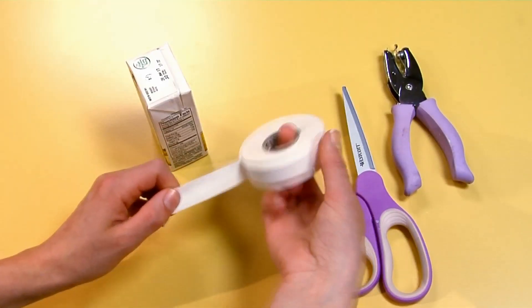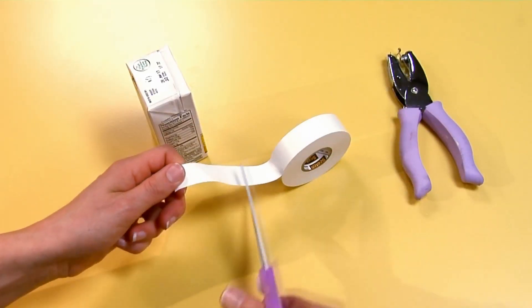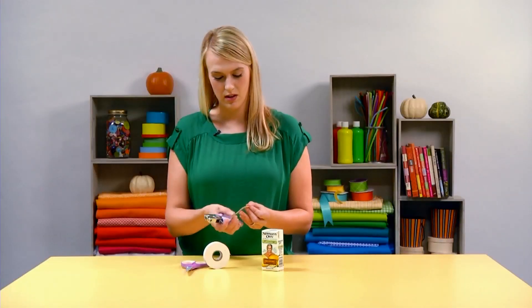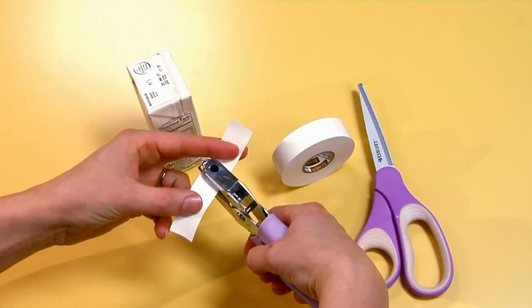First, we're going to cover the top of our juice box. Take a piece of electrical tape, just cut a strip about three inches long. Then grab your hole punch, and you're going to put a hole right in the center.